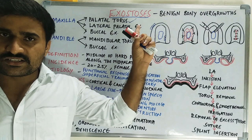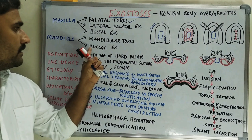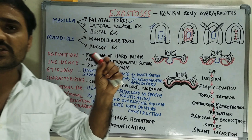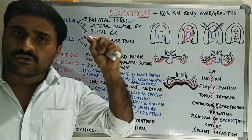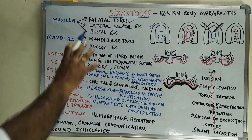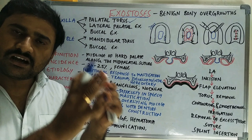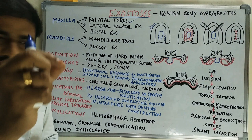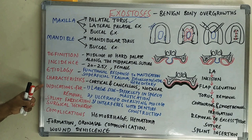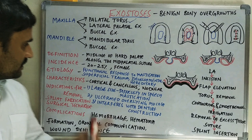Among these, the most important one is palatal torus. In the mandible we have mandibular torus and buccal exostoses. Among the classification of exostoses, palatal torus and mandibular torus are commonly asked as short answers or very short answers. The content list we will cover includes definition, incidence, etiology, characteristics, indications for removal and splint fabrication, surgical technique, and complications.